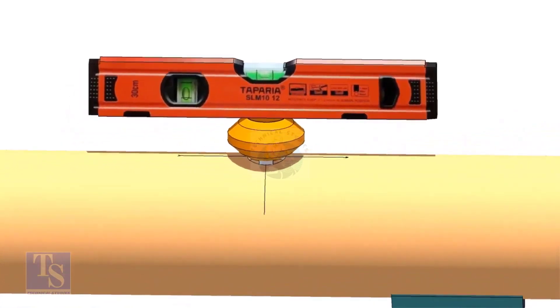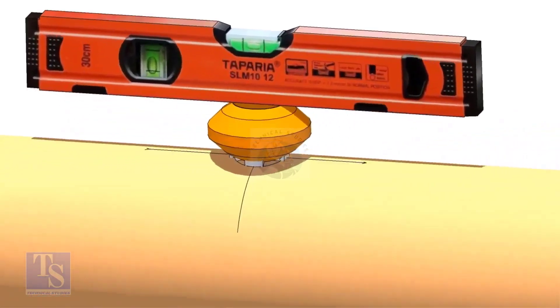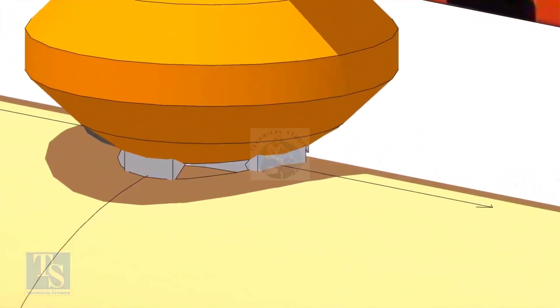If the level is correct on both ways, tack weld on the longitudinal side.